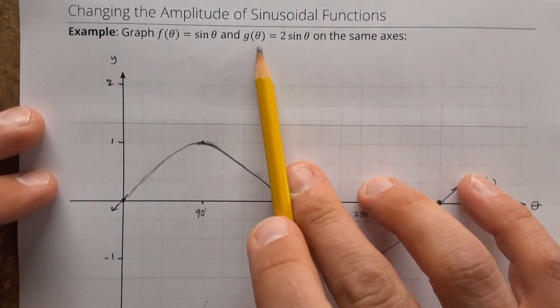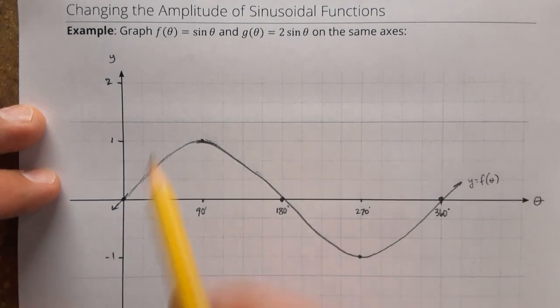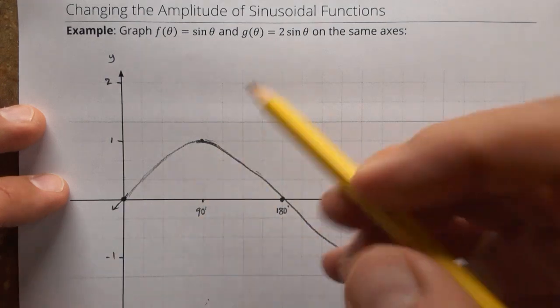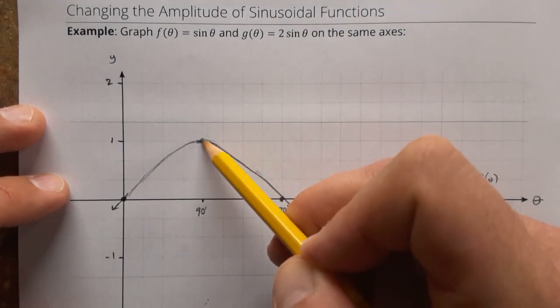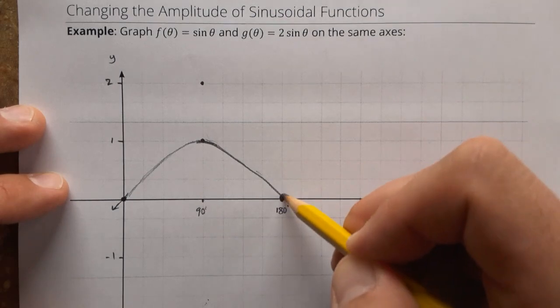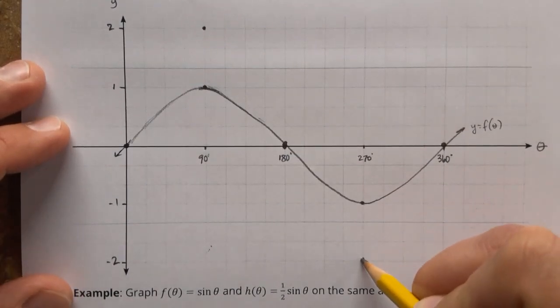Now, the other function, g of theta, is two times this one. All of the y values are doubled. So this y value, zero, is doubled, and it'll still be zero. This y value, one, is doubled and becomes two. This y value is doubled and becomes zero. Negative one becomes negative two, and back up to zero again.